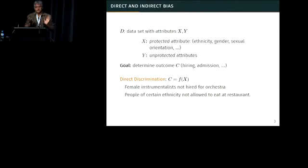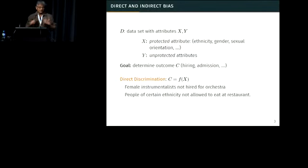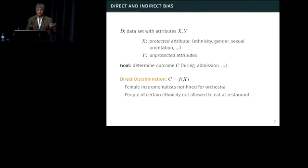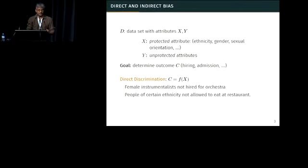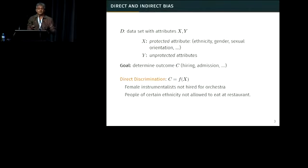The easiest form of discrimination to understand is what I'll call direct discrimination, where the outcome is directly determined by the attributes you're not supposed to be using. So an example would be where for many years, female instrumentalists were not hired for symphony orchestras. In the bad days of segregation in the U.S., people of certain ethnicity were not allowed to eat at certain restaurants. This is an easy example because you can say you're using a feature that you're not supposed to use.